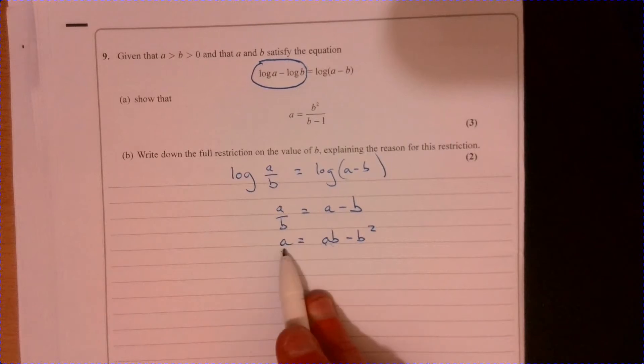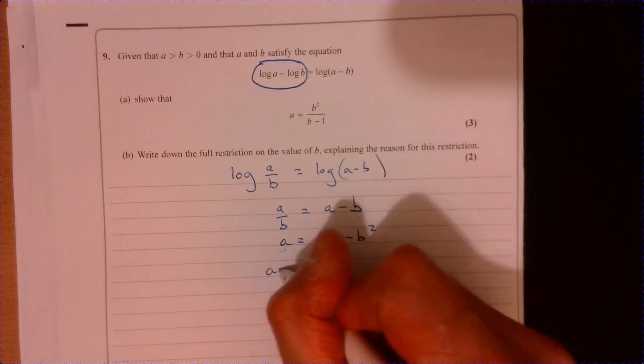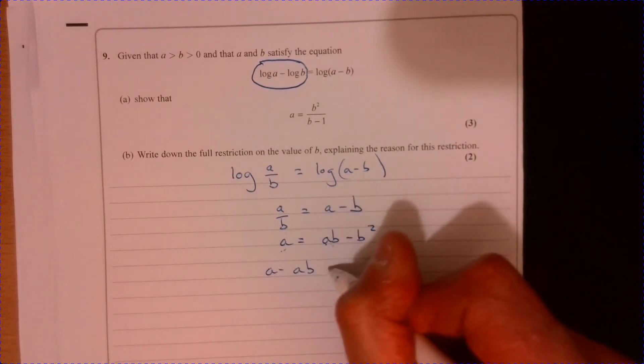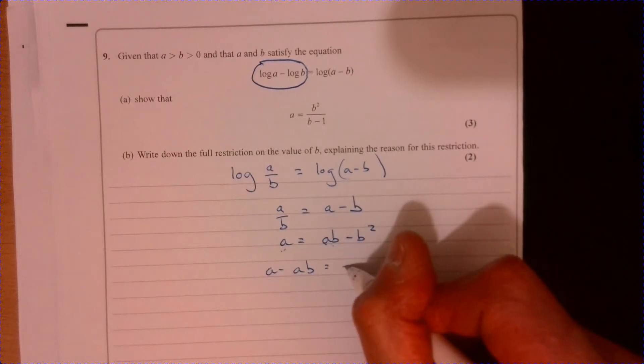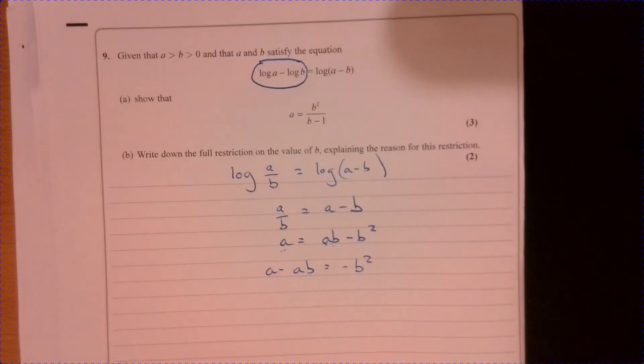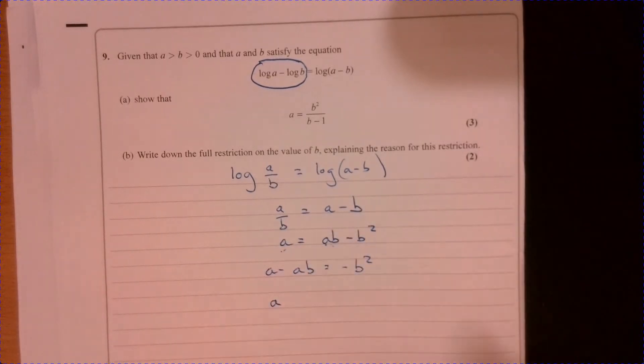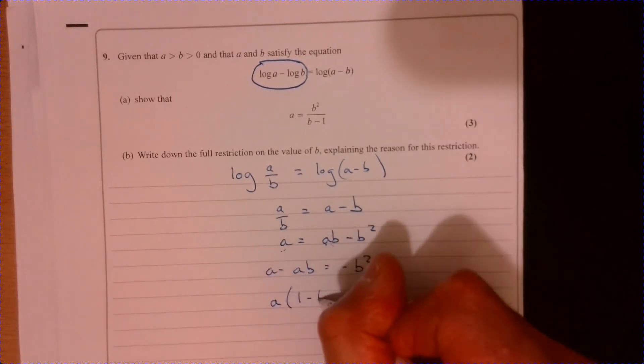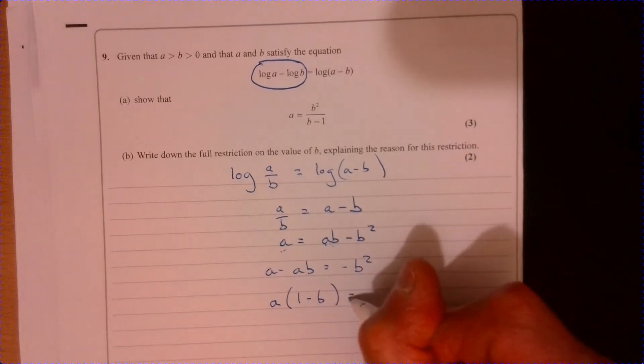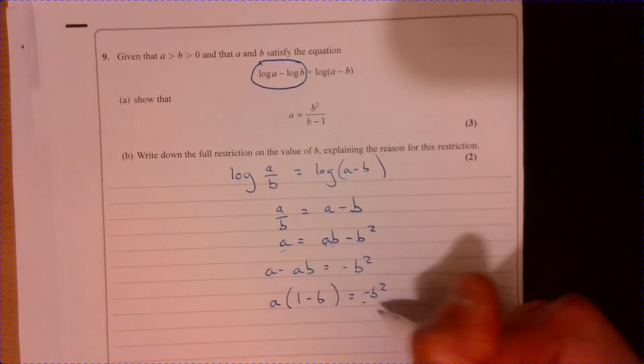Get all the A's on one side. So A take away A over B. That equals minus B squared. And let's go 1 minus B. And that's minus B squared.